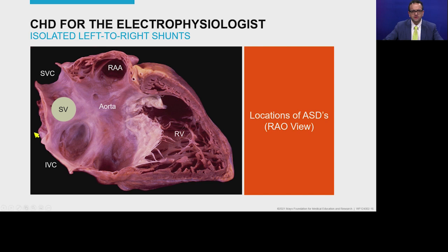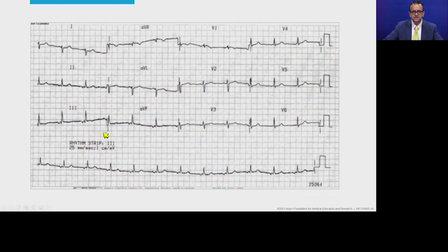Another type of ASD is the sinus venosus ASD, which is basically a communication between the right superior pulmonary vein and the superior vena cava. In this location you also have the sinus node — because of the defect at this level, the sinus node gets pushed downwards. This is a typical ECG of a sinus venosus ASD. You can see the P waves are inverted in the inferior leads, and we may wonder whether this is actually an ectopic rhythm — but it turns out this is still a sinus rhythm.